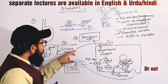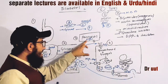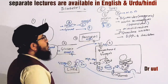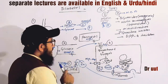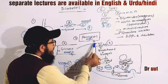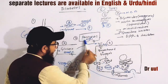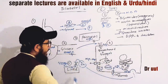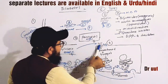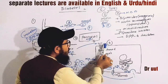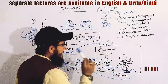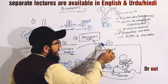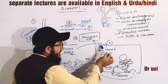Normally, when glucose reaches the pancreas, there are two types of cells in the pancreas: alpha and beta. The beta cell is responsible for releasing insulin. When glucose reaches the beta cell, there is a GLUT2 transporter present on the surface of the beta cell. This GLUT2 transporter will transport glucose from extracellular to intracellular, meaning inside the beta cell.